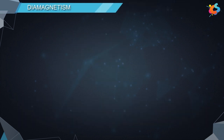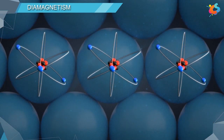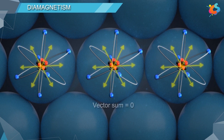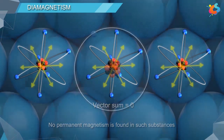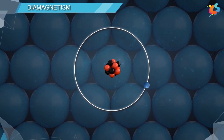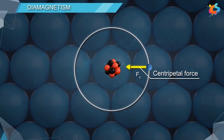Diamagnetism. In diamagnetic materials, the atoms contain fully filled paired electron orbitals. The vector sum of magnetic dipoles of all orbital electrons is zero. Hence, no permanent magnetism is found in such substances. At the atomic level, the electrons revolve around the nucleus due to the centripetal force acting on it, directed towards the center. The velocity of the electron depends on the magnitude of the centripetal force acting on it.